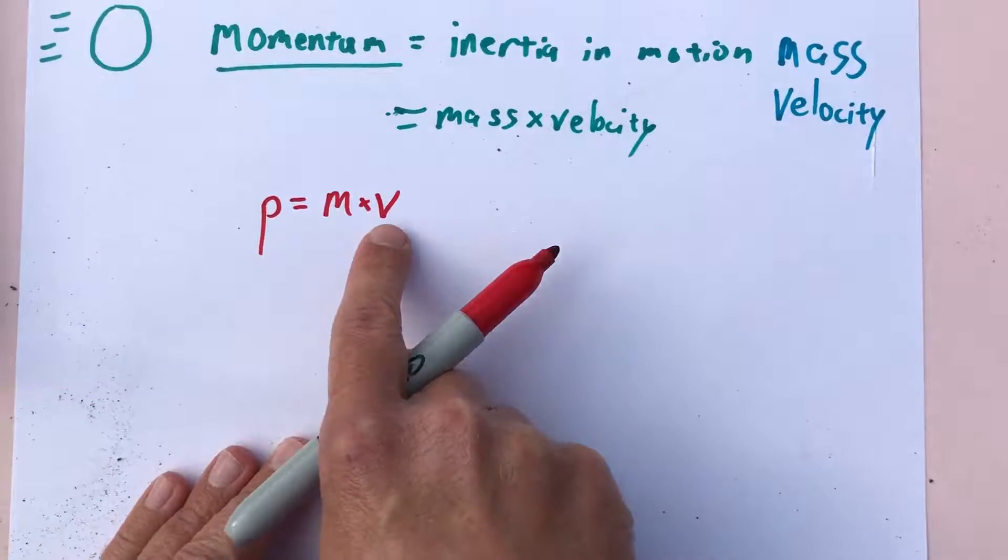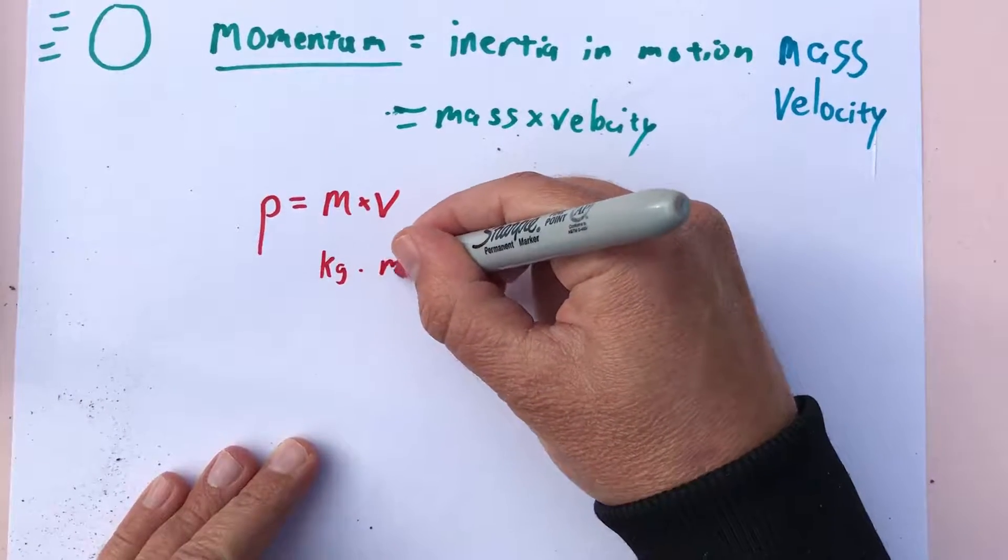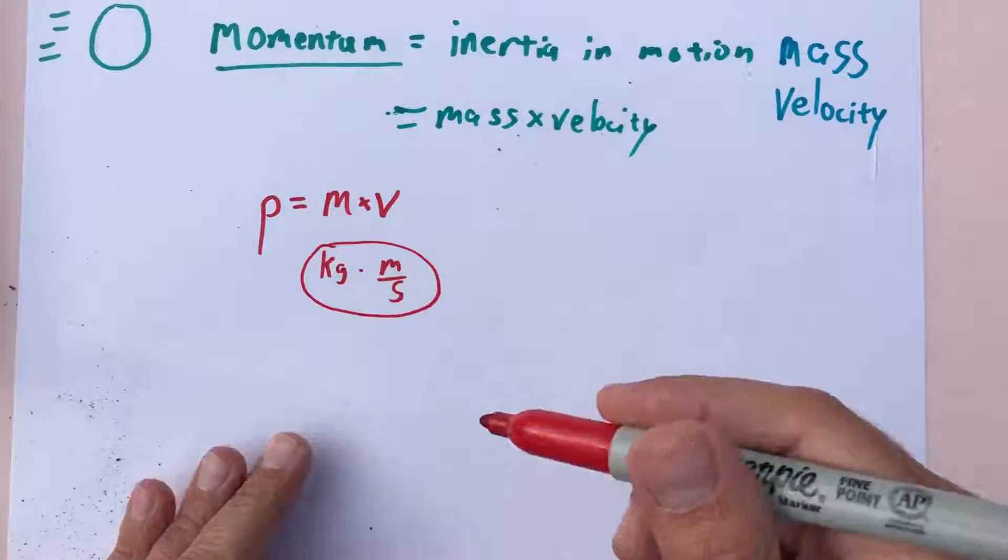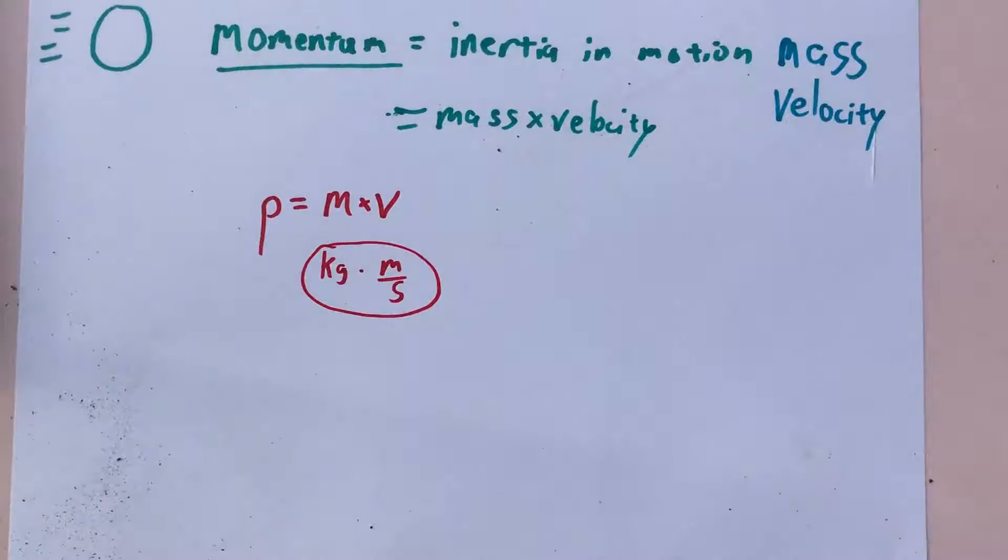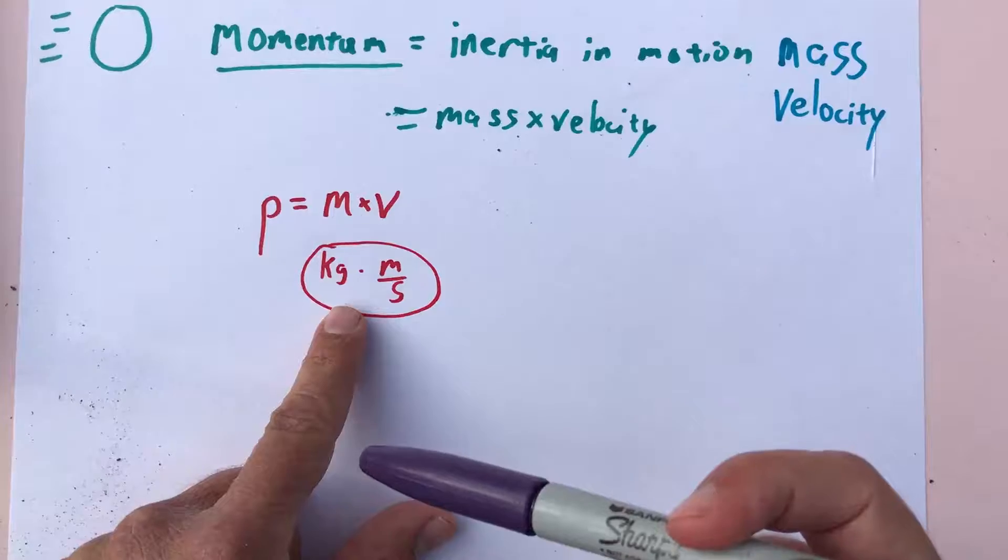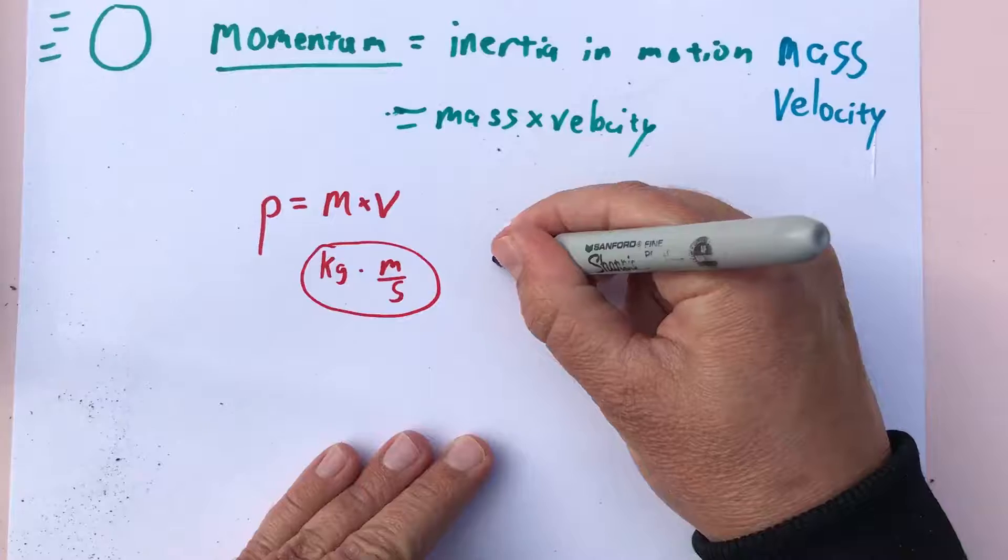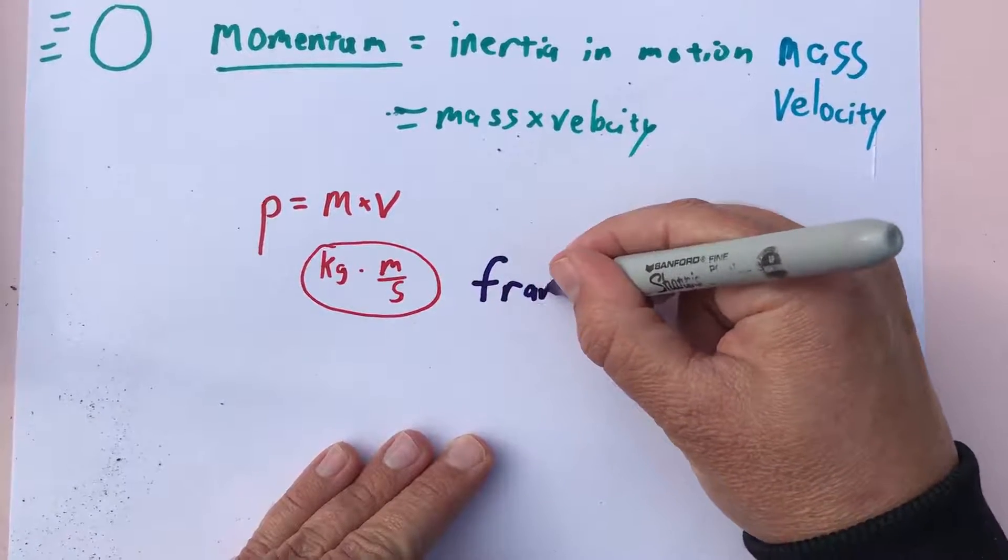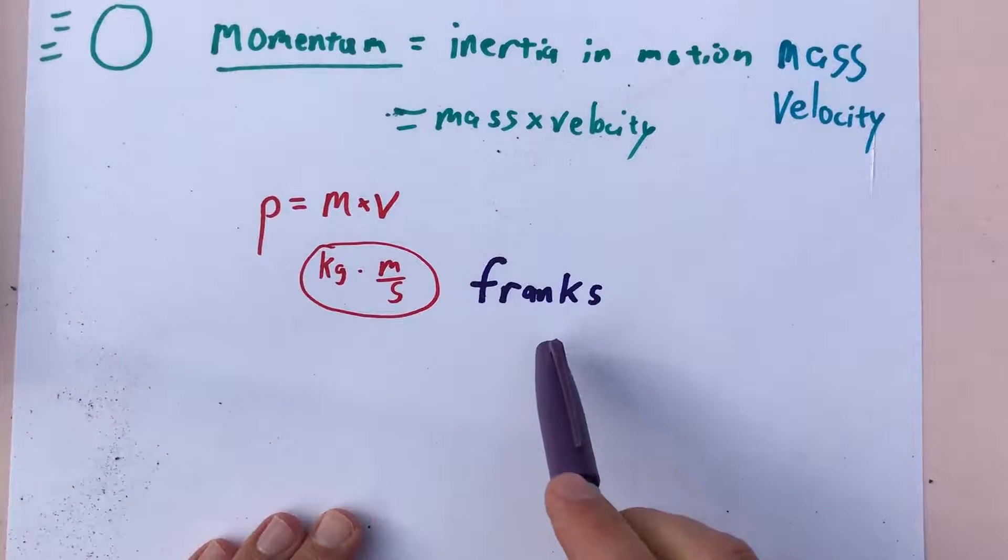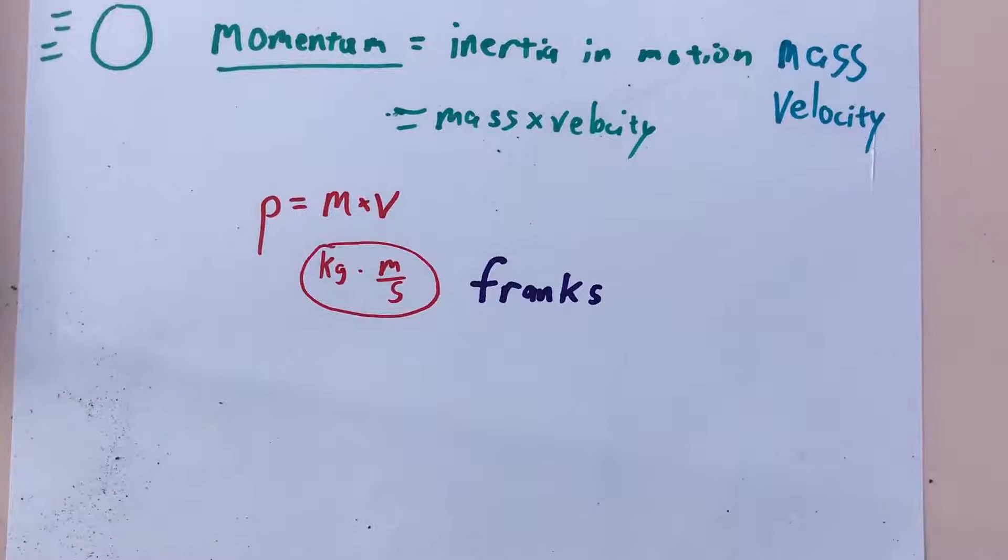The units for momentum then, since it's mass times velocity, mass is measured in kilograms, velocity is measured in meters per second, and so we get kilogram meters per second is the unit for momentum. Now we've given other things like this names like newtons or joules or watts, but we've never given this a name at all. I have written to the American Association of Physics Teachers and proposed that we call this unit a Frank. I have yet to hear back from them, but kilogram meters per second is a cumbersome way that we have to say it.